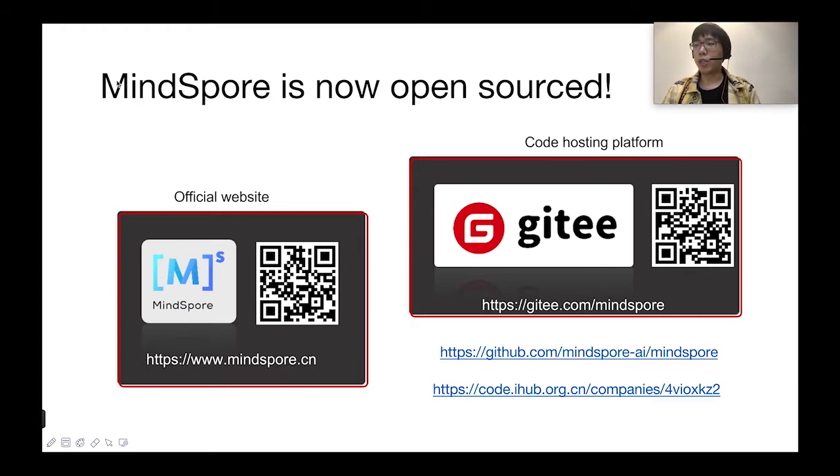MindSpore is a newly open source deep learning training or inferencing framework that could be used for mobile, edge, and cloud scenarios. MindSpore is designed to provide development experience with friendly design and efficient execution for data scientists and algorithm engineers, and provide native support for Ascend AI processor with software hardware co-optimization. At the meantime, MindSpore as a global AI open source community aims to further advance the development and enrichment of the AI software hardware applications ecosystem. You can see our official website and the QR code on the right. We host our code on gitee.com and also on github.com slash MindSpore-AI slash MindSpore.